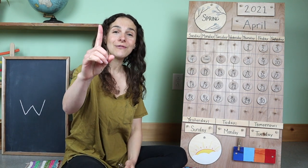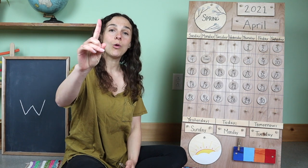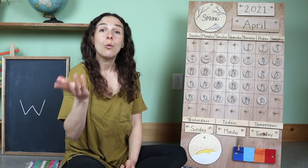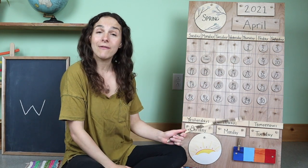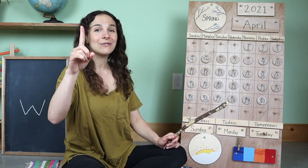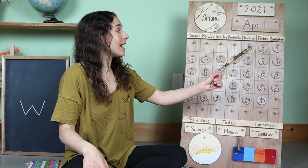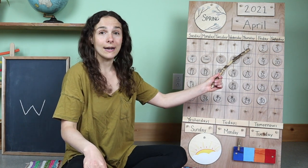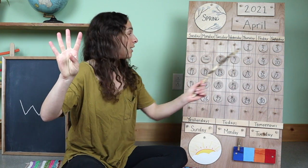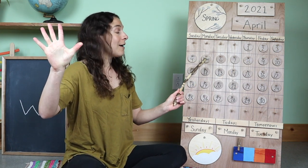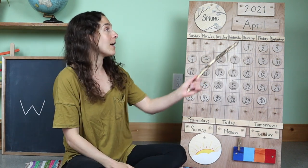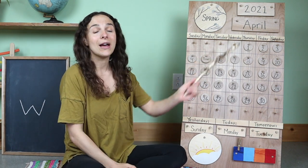Now, can I see your counting fingers like this? And we'll warm them up and give them a little stretch. We are going to count all of the days that we've had so far in the month of April. So get those counting fingers ready. And let's start up at the number one. Two, three, four, five. We have had five days so far in the month of April.